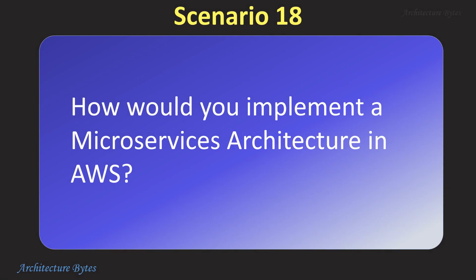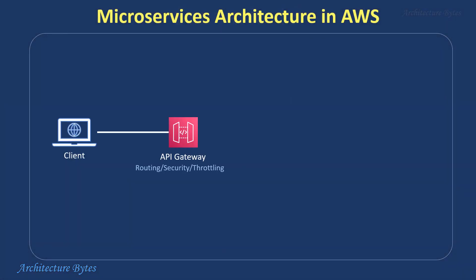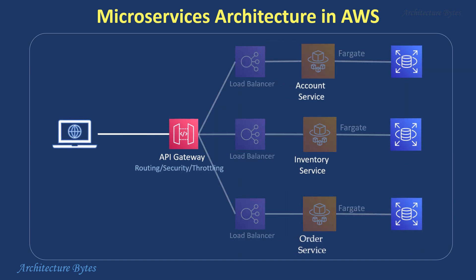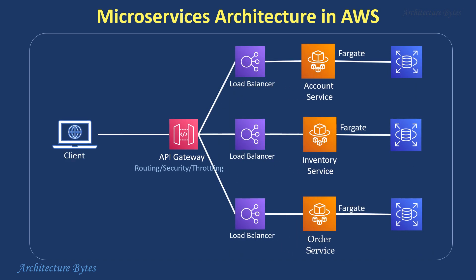How would you implement a microservices architecture in AWS? Here is an example. The account service, inventory service, and order service are implemented as microservices via Lambda functions, and each service has its own data storage. API Gateway routes incoming requests to these services. A variation of this has microservices deployed in containers managed by AWS Fargate.